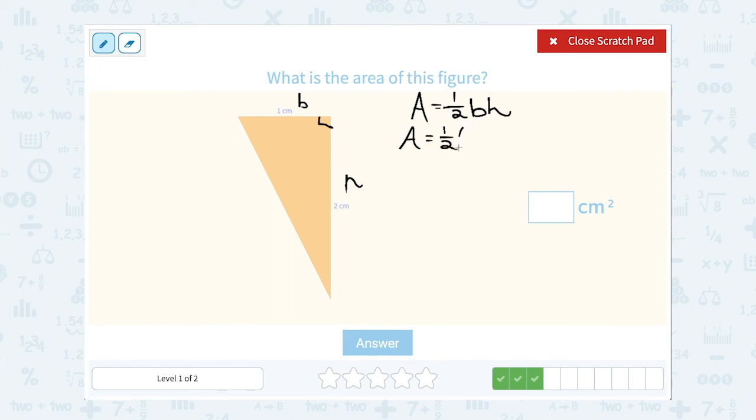In place of b let's use our side that was one centimeter. And in place of height let's use our side that was two centimeters. And just like always you can multiply in any order. So this is going to be one half one times two or one half of two. And half of two is one. So our area would be one centimeter squared.